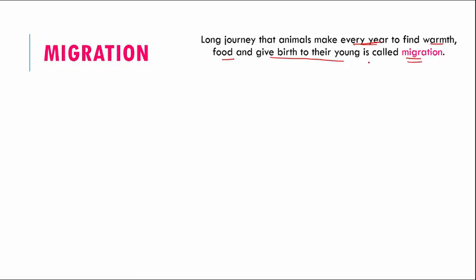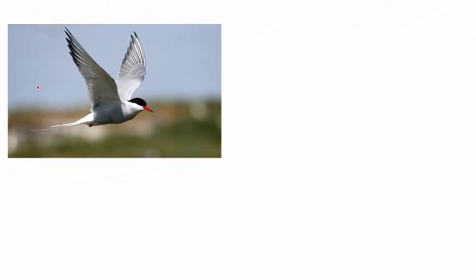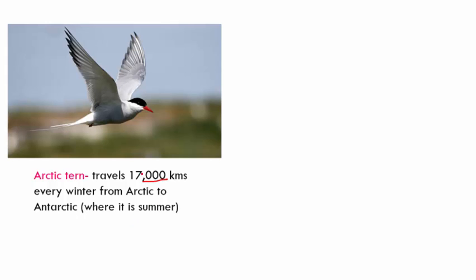The first example is the Arctic tern — the bird that travels the longest distance. It travels 17,000 kilometers every winter from the Arctic to the Antarctic. When there is winter in the Arctic, it flies to the Antarctic where there is summer, and when the Antarctic has winter, it flies back to the Arctic where it will be summer.